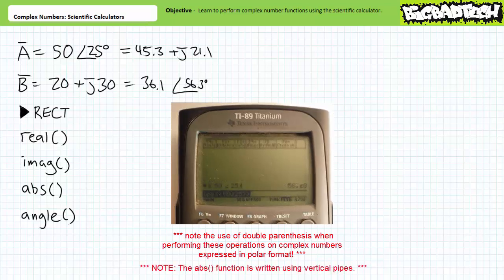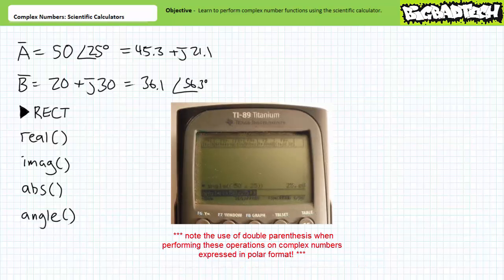If we want just the magnitude of complex number A, I choose absolute from the catalog entry and close complex number A inside parentheses, in whatever format I want, rectangular or polar, and press enter. The calculator returns 50 as we'd expect. Finally, if we want just the angle of complex number A, I choose angle from the catalog entry and close complex number A inside parentheses, press enter. The calculator returns 25 degrees as we'd expect.